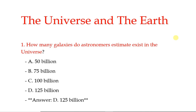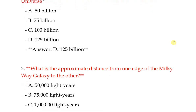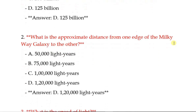The Universe and the Earth. How many galaxies do astronomers estimate exist in the Universe? Correct answer: 125 billion. 2nd question: What is the approximate distance from one edge of the Milky Way galaxy to the other? 1,20,000 light years.